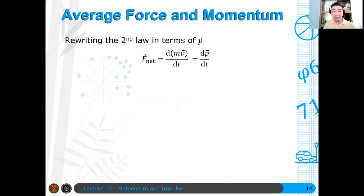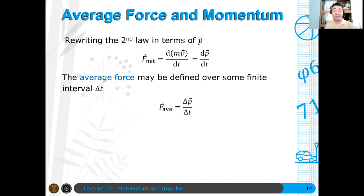Ayaw kasi natin ng integration sa physics 7. So let's say you have some average force. And for some average force, this time derivative becomes basically change in momentum per time. Parang, naalala nyo yung instantaneous velocity nyo, binalik nyo sa average velocity. You have your instantaneous force as a force time function. Instead of doing that, we go to the average force. Let's say F_average, which is just equal to the change in momentum per time.